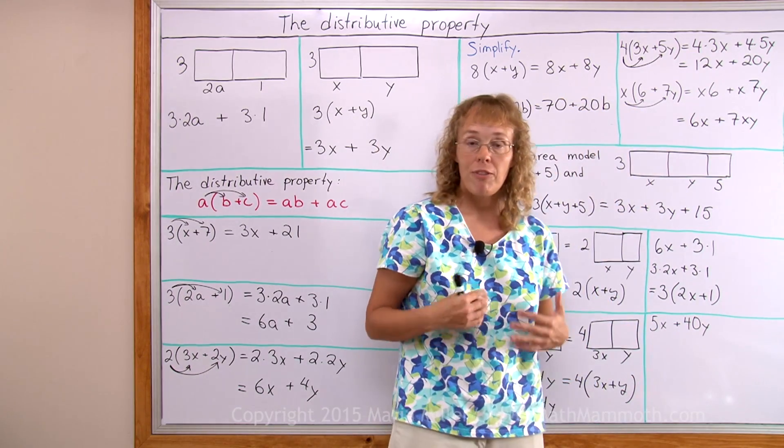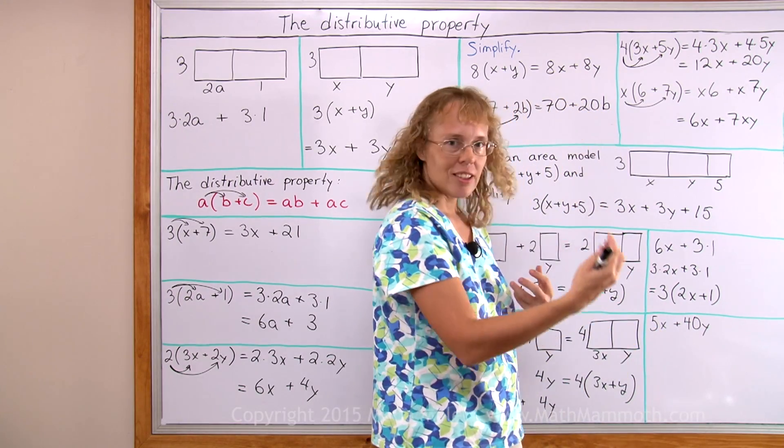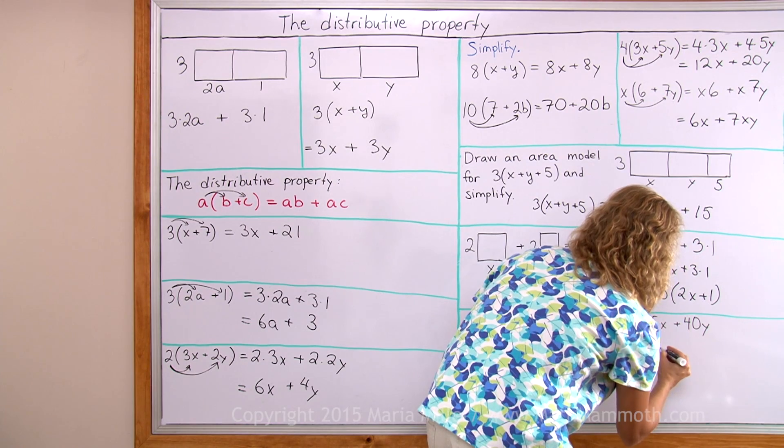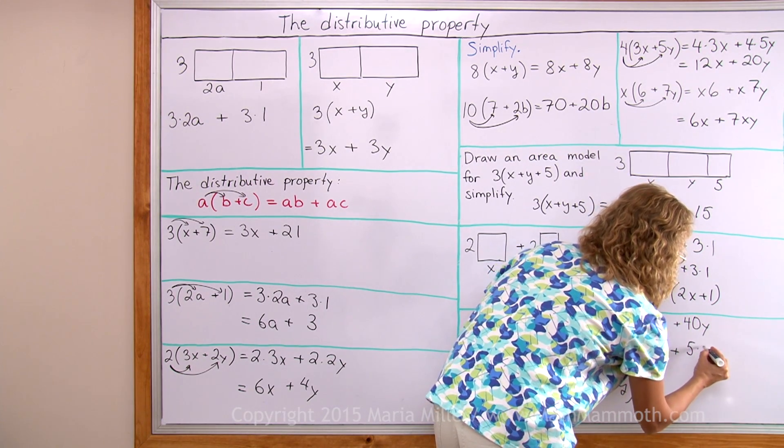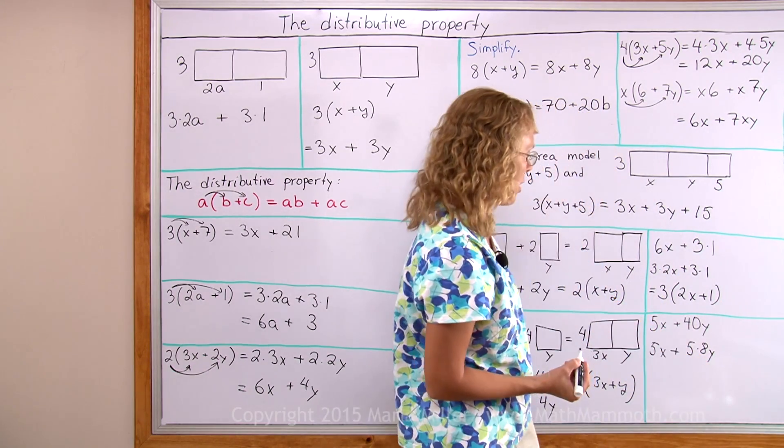And let's do the same here. What would be the common factor or the common side length? Again, in 40 there is a 5, so I can use that. I'll write 40 as 5 times 8. And don't forget the y from there. It's still there. You cannot drop it.